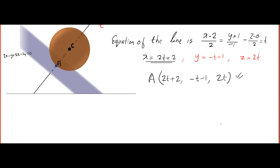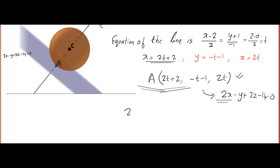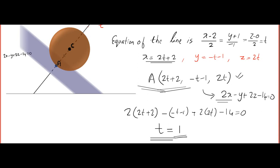Point A is also on the plane, so its coordinates must satisfy the plane equation 2x − y + 2z − 14 = 0. Substituting: 2(2t + 2) − (−t − 1) + 2(2t) − 14 = 0. Solving gives t = 1. The point of contact is therefore (2·1 + 2, −1 − 1, 2·1) = (4, −2, 2).